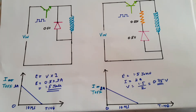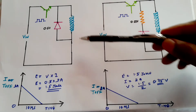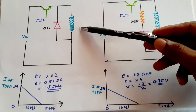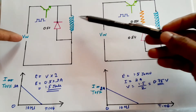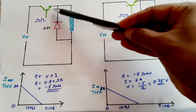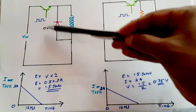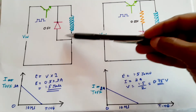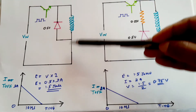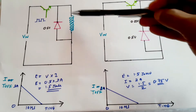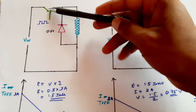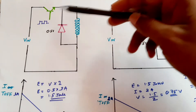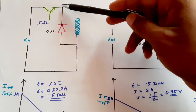Hello and welcome. Today we are going to look at the property of the inductor — that the inductor does not want to change its current; whenever there is a change in current, the inductor will oppose it. We have an inductor with an input voltage Vin, a transistor to switch it on and off, and a diode connected. When the switch is on, the current is flowing through the inductor, and the voltage across the inductor is positive.